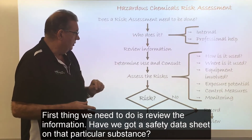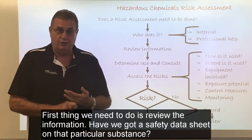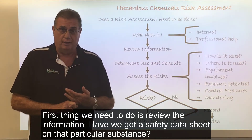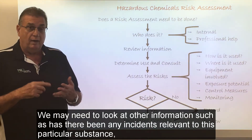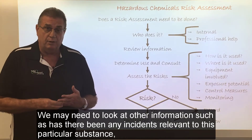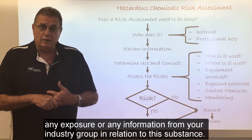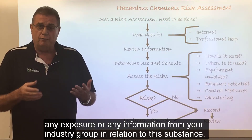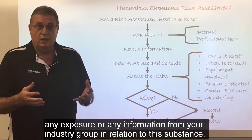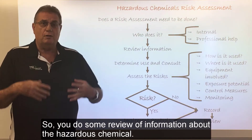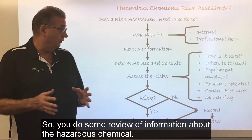The first thing we need to do is review the information. Have we got a safety data sheet on that particular substance? We may need to look at other information, such as whether there have been any incidents relevant to this particular substance, any exposure information, or any information from your industry group in relation to this substance. So you do some review of information about the hazardous chemical.